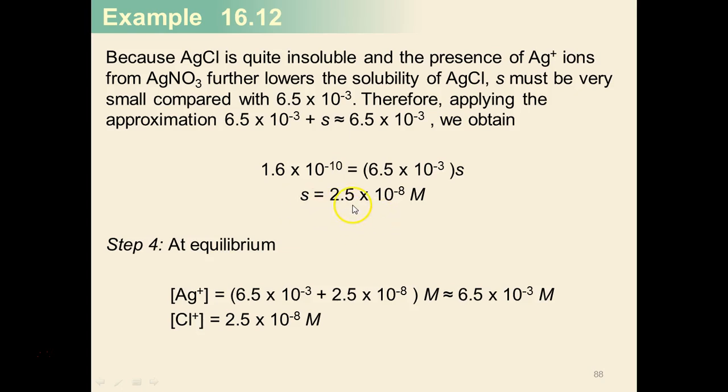So once you have that value for s at equilibrium, the concentration of silver ions is 6.5 times 10 to the negative third plus that, so it's roughly still equal to 6.5 times 10 to the negative third.